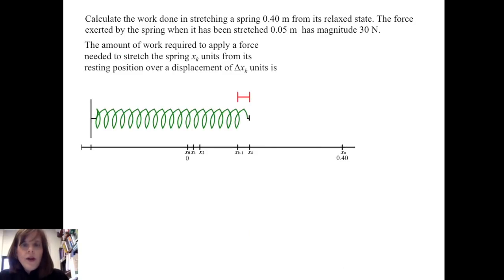The amount of work required to apply a force needed to stretch the spring xₖ units from its resting position over a displacement of Δxₖ units is given by ΔWₖ. So this small amount of work done is approximately the force at xₖ times xₖ minus xₖ₋₁.